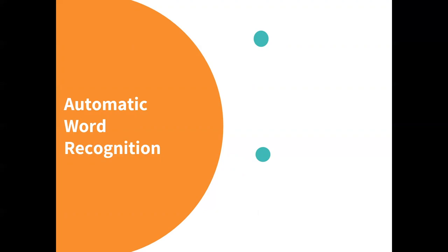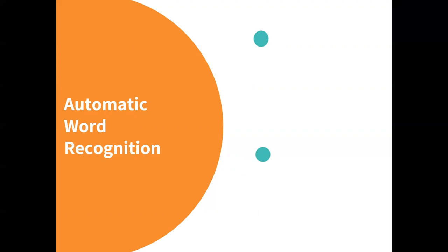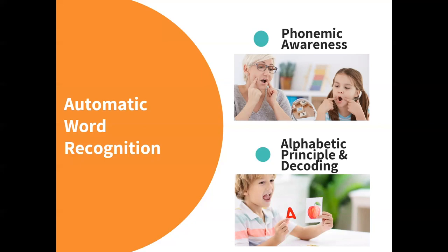One of the important components of automatic word recognition is phonemic awareness. Remember that we do not store words as visual wholes. Instead, we attach every letter to a speech sound. Students need to be able to identify speech sounds in words, blend, segment, and manipulate those sounds in order to store words for automaticity. They also need to master the alphabetic principle, and phonemic awareness is the first step to help them master the alphabetic principle, which is going to lead to decoding. Decoding over time is going to lead to automatic word recognition.